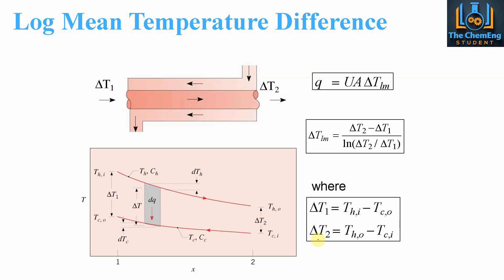For counter current flow, delta T1 is the inlet of the hot minus the outlet of the cold, and delta T2 is the outlet of the hot minus the inlet of the cold. This overall gives us a better log mean temperature difference compared to co-current flow. When you are given a problem and you know you don't have a uniform temperature difference through your heat exchanger, you must use the log mean temperature difference. You then need to determine whether you're dealing with counter current or co-current flow and adjust the delta T1 and delta T2 equations respectively.